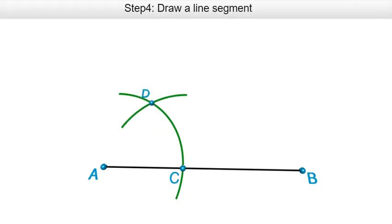Step four, which is the final step. I'm going to draw a line segment from A through D. So a line from A through D is going to give me a 60 degree angle.